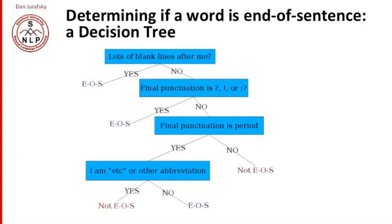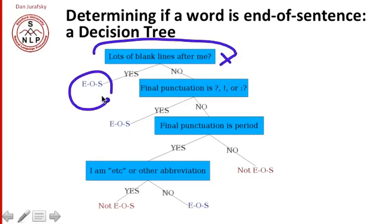So here's a simple decision tree for deciding whether a word is an end of sentence or not. A decision tree is a simple if-then procedure that asks a question and branches based on the answer to the question. So we say, am I in a piece of text that has a lot of blank lines after me? Well, if so, then I'm probably an end of sentence.